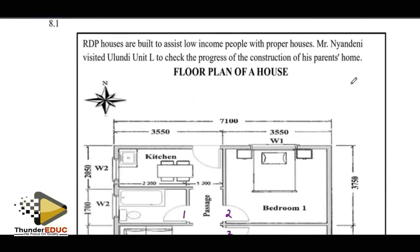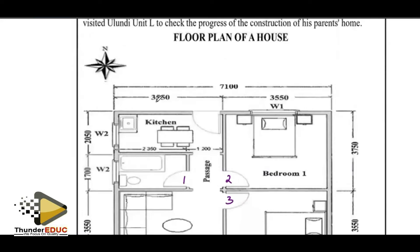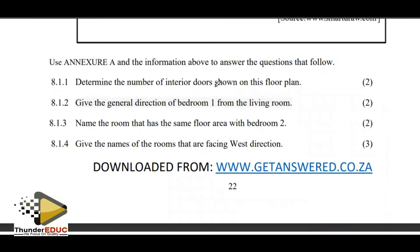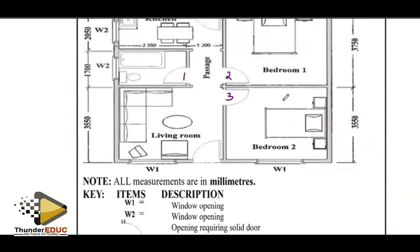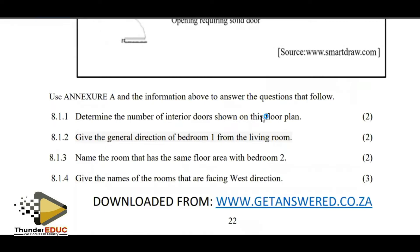RDP houses are built to assist low income earners with proper houses. Mr. Nyandeni visited one of the units to check on the progress of the construction of his parents' house. A floor plan is a layout of how a house will look. It may have a compass and measurements. Question one asks us to determine the number of interior doors — those inside — and we have one, two, three: three interior doors.